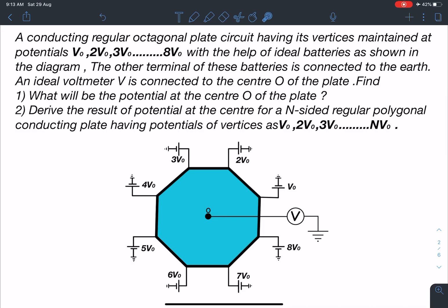With the help of ideal batteries as shown in the diagram, the other terminal of these batteries is connected to earth. An ideal voltmeter is connected to the center O of the plate, so there will not be current in this branch. Find what will be the potential at the center of the plate, and derive the same result for an N-sided regular polygonal conducting plate having potentials of vertices as V0, 2V0, 3V0 up to NV0.